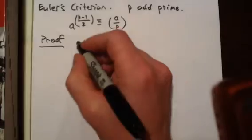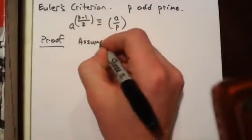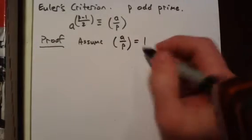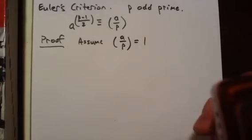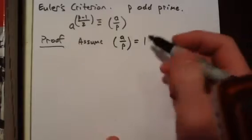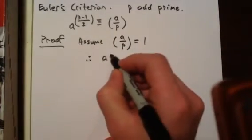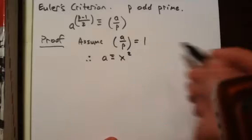So first, let's assume A over P is 1. We know it has to be either 1 or negative 1 by the definition of the Legendre symbol, and so therefore there is an X such that A is congruent to X squared mod P.